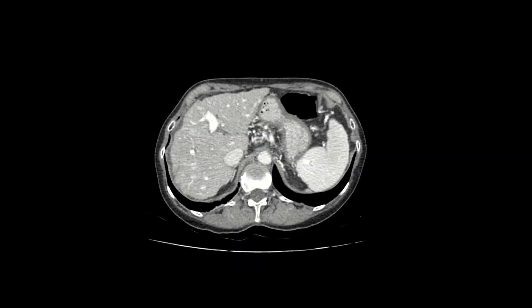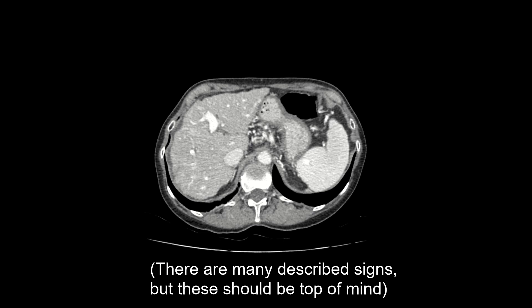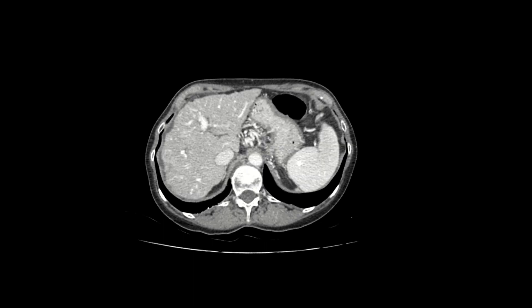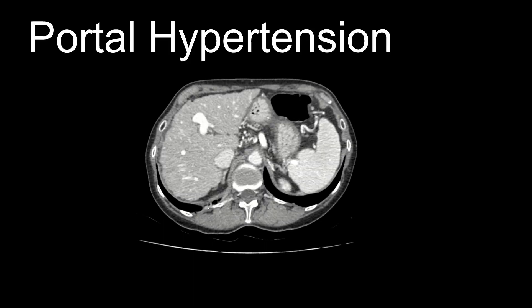So if you take one thing away from this: when you're looking at the liver on CT routinely, you want to recognize if there is frank surface nodularity and if there is apparent lobar redistribution. Another thing that you can pick up on CT is evidence of portal hypertension, or an elevated blood pressure in the portal venous system.